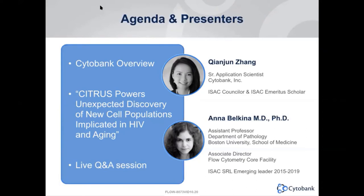For today, I'll give an overview of Cytobank, introducing some of the tools available to help visualize and analyze high dimensional cytometry data with a focus on Citrus. Dr. Belkina will then share her research on how she used Citrus to identify stratifying features that differentiate HIV positive and aging cohorts versus uninfected controls. It will be followed by live Q&A. You may submit your questions anytime during the talk in the Q&A window.